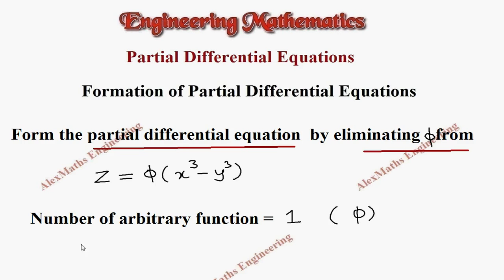So we are going to use the first order derivatives, that is ∂z/∂x which is named as p, and ∂z/∂y which is named as q, only these two to eliminate the arbitrary function.